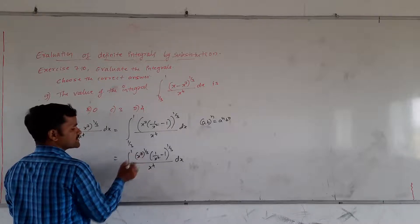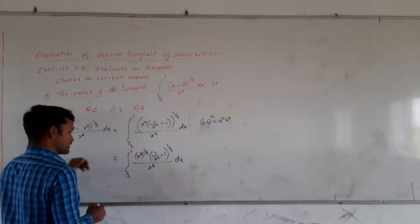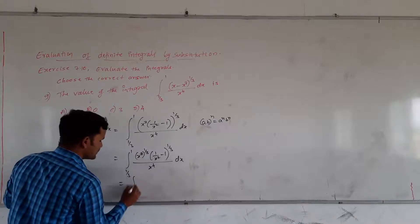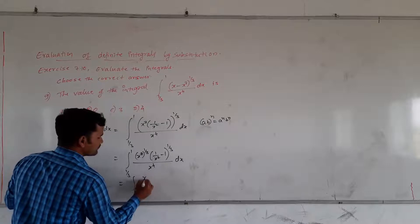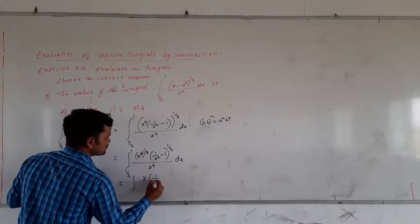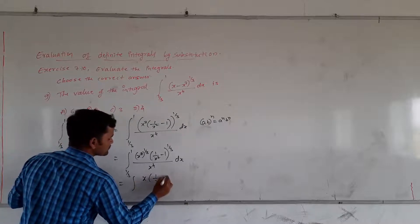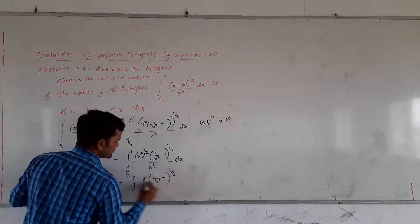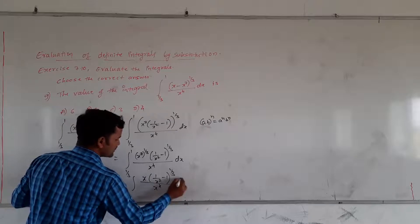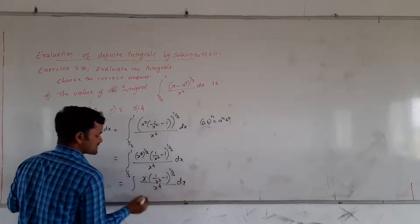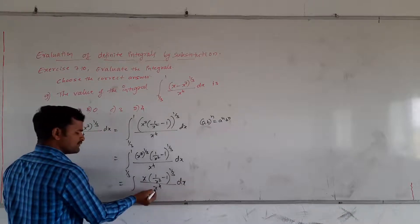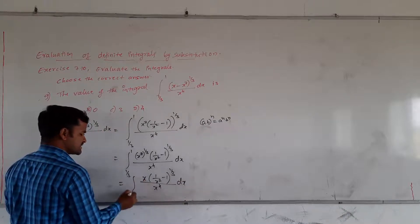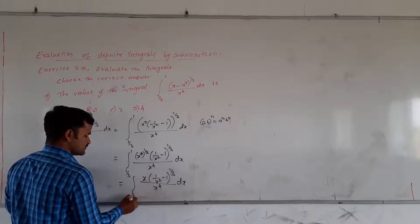Using the rule (a · b) raised to n equals a raised to n into b raised to n, the first function becomes x³ whole raised to 1/3, which equals x, into (1/x² minus 1) raised to 1/3, divided by x raised to 4. Here, cube and cube root cancel out. We have the integral of x into (1/x² minus 1) to the power 1/3, divided by x³, from 1/3 to 1.